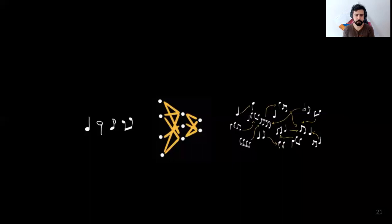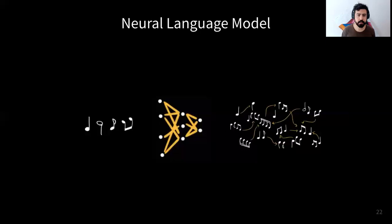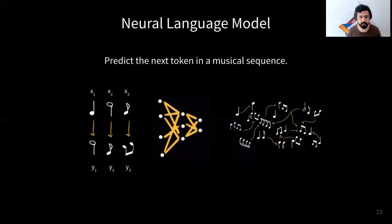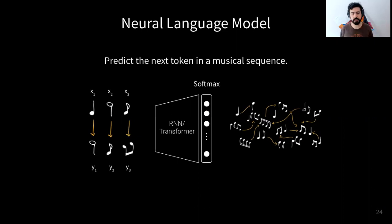Let's formalize how these networks work. They work as neural language models, meaning the dataset is organized as x and y pairs where both x and y are notes, and the network is trying to predict a note y from x. The architecture of these networks is normally RNNs or transformer networks, and they have a softmax activation function as the output layer.